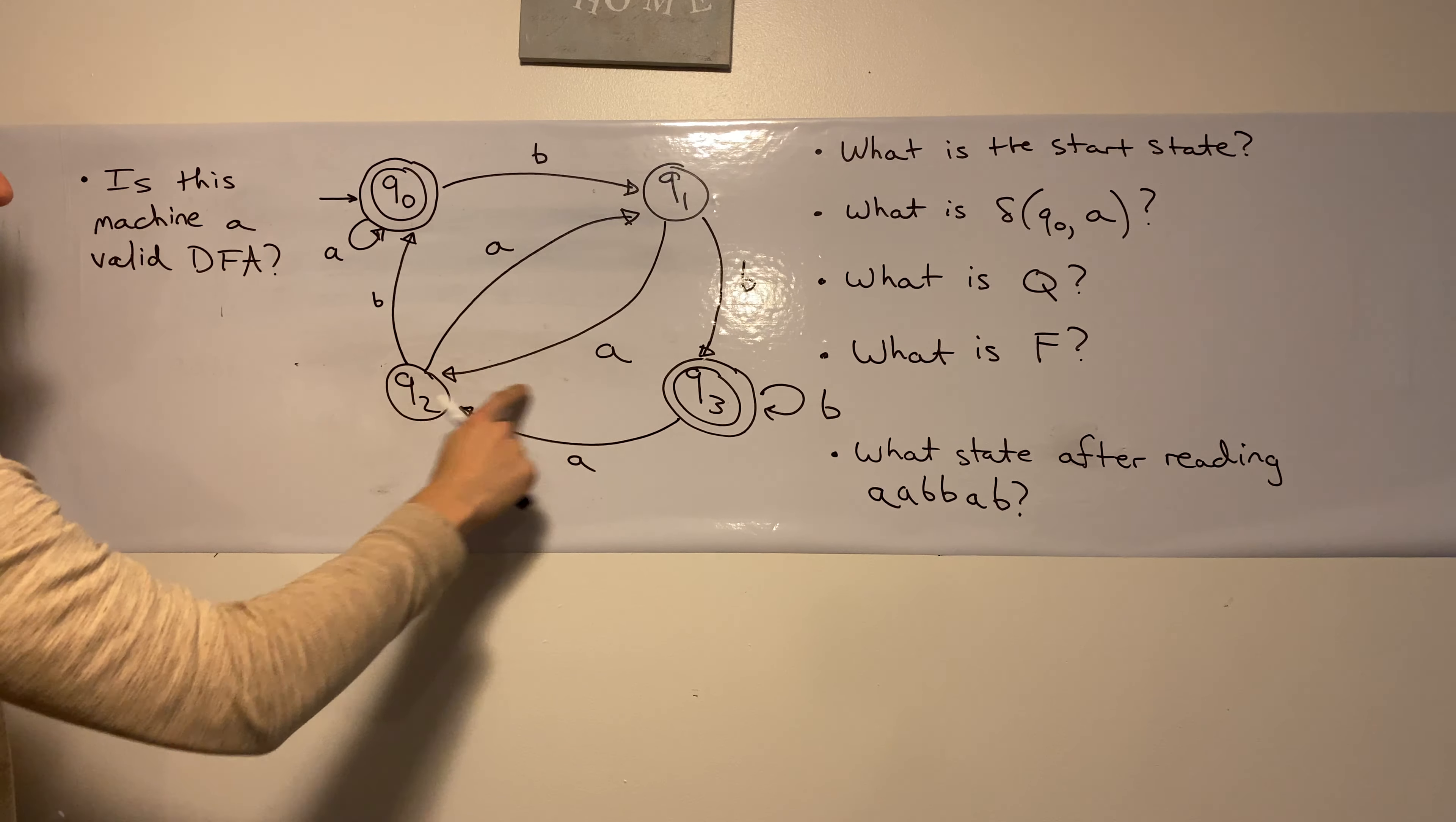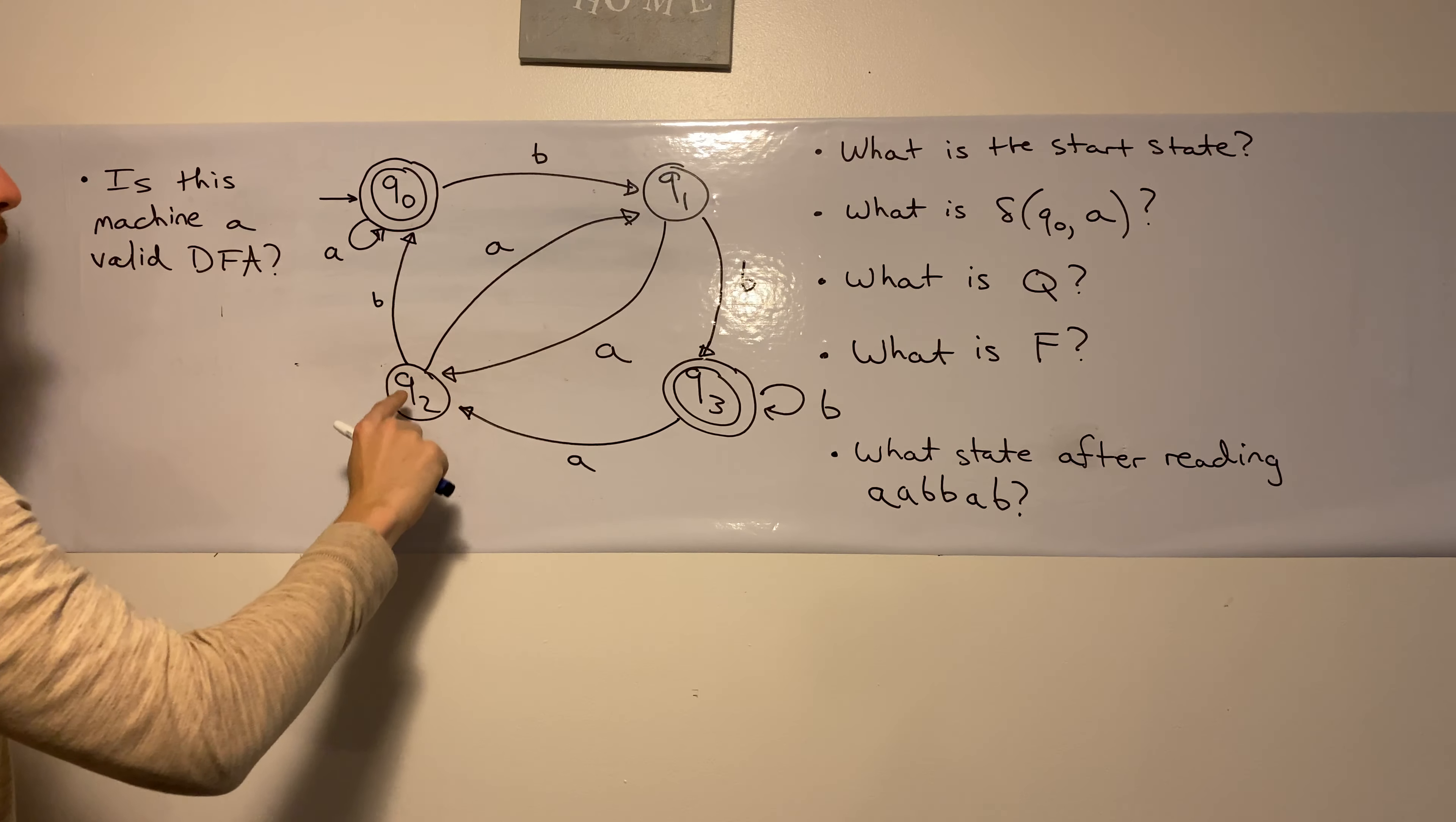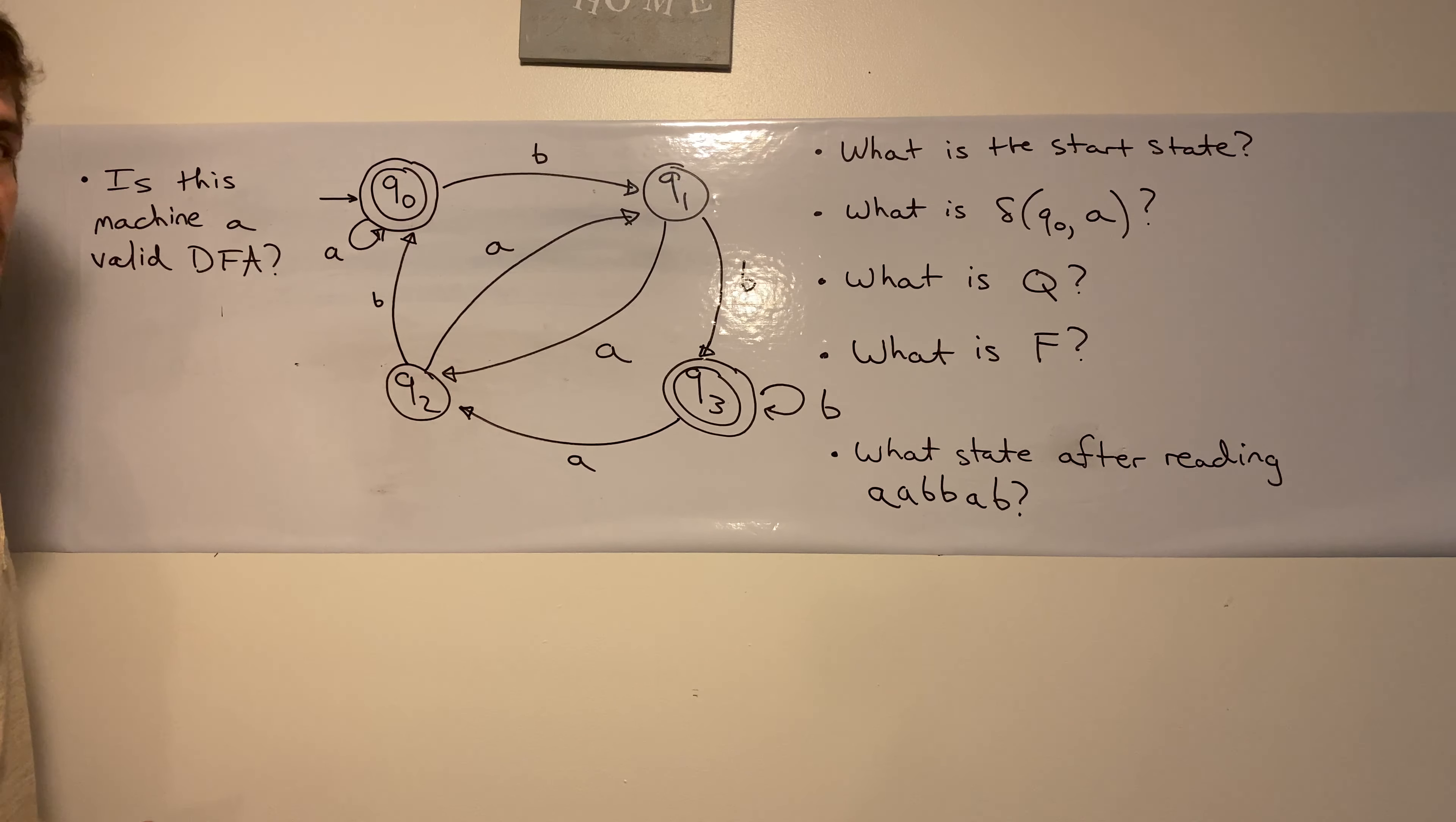Q1 has a transition on A and one on B, so it looks good. Q2 has a transition on A and one on B, so it looks good. Q3 has a transition on A and one on B, so it looks good.